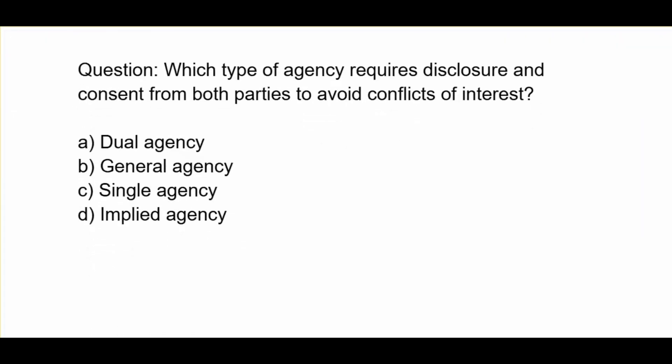Which type of agency requires disclosure and consent for both parties to avoid conflicts of interest? A. Dual agency. B. General agency. C. Single agency. D. Implied agency.